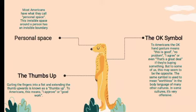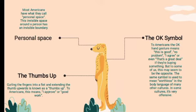Second, the okay symbol. The okay hand gesture is commonly misunderstood by those unfamiliar with American body language. It involves making a circle with the thumb and pointer finger while allowing the other three fingers to fan out. To Americans, the okay hand gesture means 'this is good,' 'no problem,' 'I agree,' or 'that's a good deal.' However, the same symbol can mean something offensive in the body language of many other cultures.